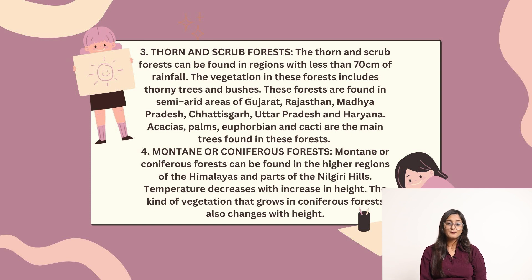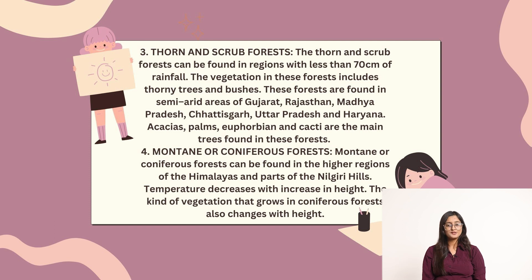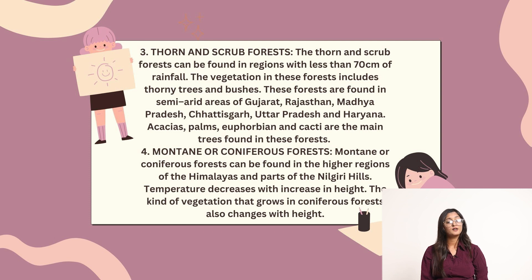Thorn and scrub forests can be found in regions with less than 70 cm of rainfall. The vegetation in these forests includes thorny trees and bushes. These forests are found in semi-arid areas of Gujarat, Rajasthan, Madhya Pradesh, Chhattisgarh, Uttar Pradesh and Haryana.